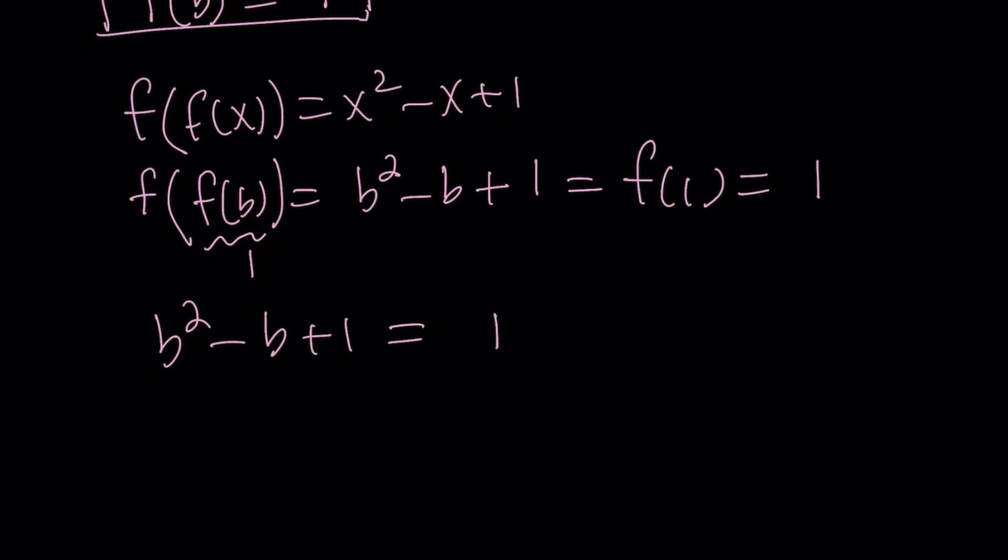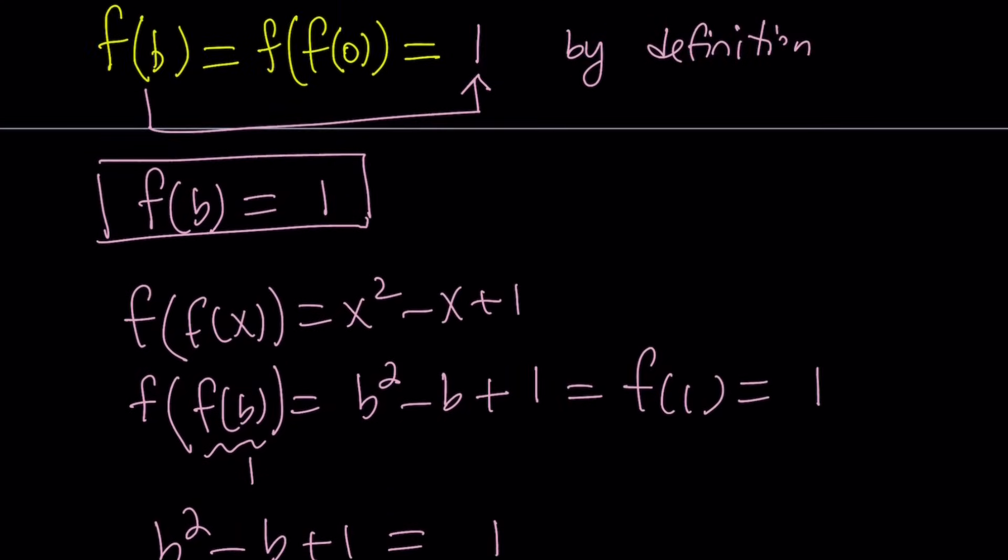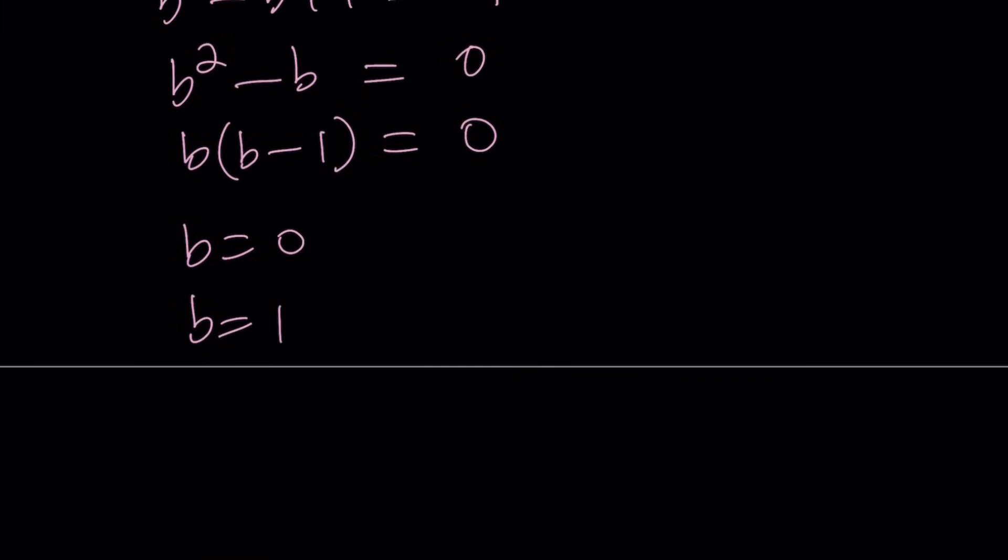So now we do know that we have an equation in b. b squared minus b plus 1 equals 1. Let's go ahead and rewrite it and solve it. By subtracting 1 from both sides, we get the simple equation b squared minus b is equal to 0. Factoring out the b, we see that b is either 0 or 1. But which one? Can you have two different values for b? Can there be multiple values? And what is b? b is f of 0. So, can f of 0 be 0 and 1 at the same time? And the answer is no. A function has to be well defined. If you have one input, it cannot have more than one output. This is a no-no for functions. Therefore, f of 0 is either 0 or 1, but not both.